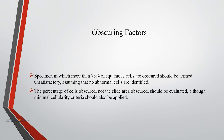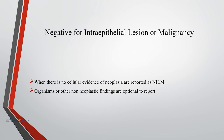Specimens in which more than 75 percent of squamous cells are obscured should be termed unsatisfactory, assuming no abnormal cells are identified. The percentage of cells obscured — not the slide obscured — should be evaluated, and all minimum cellularity criteria should also be applied. In this image, more than 75 percent of epithelial cells are obscured by inflammatory cells; hence the specimen is considered unsatisfactory for evaluation.